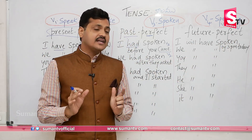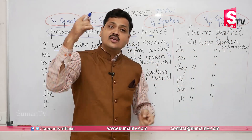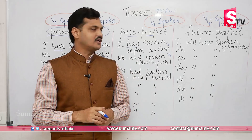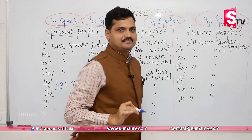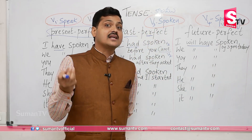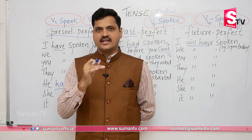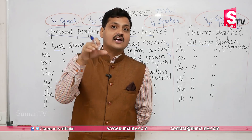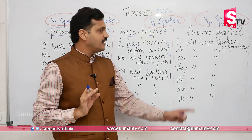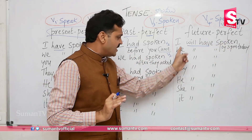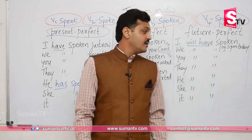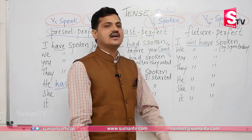Next, future perfect. Future perfect means something that will have been completed at a future point. The pattern is: will have + V3. For example: 'I will have spoken by 3pm today' — meaning I will finish speaking by 3pm. Another example: if you travel by train tonight and reach your village by morning — 'I will have reached my village by 7am tomorrow morning.' For all subjects including he, she, it, we use 'will have' — not 'has' — in future perfect.